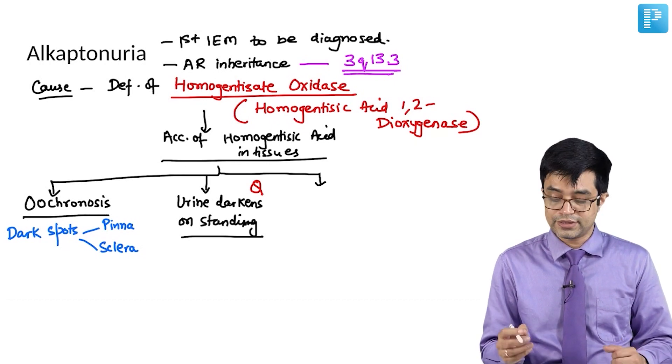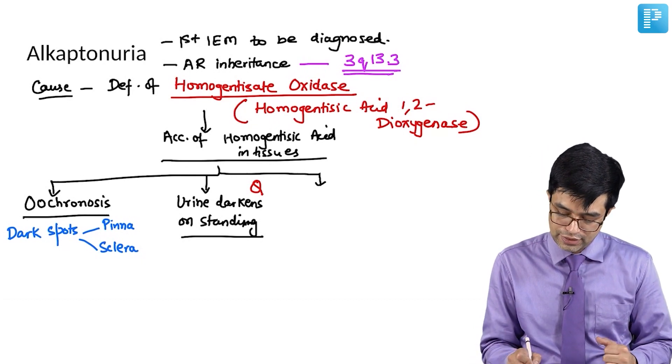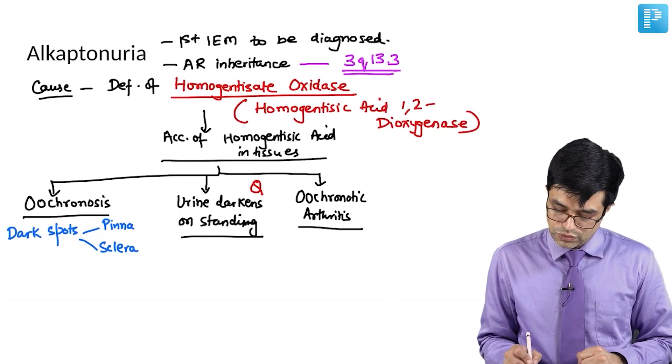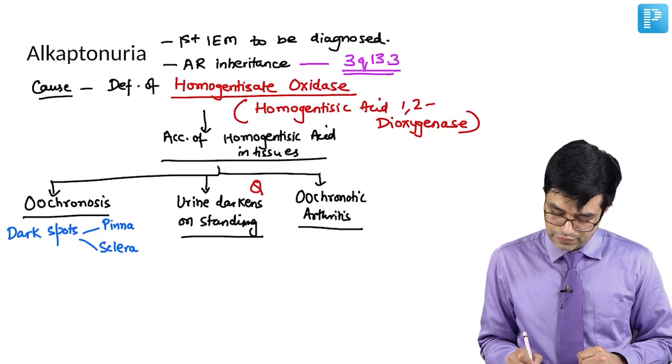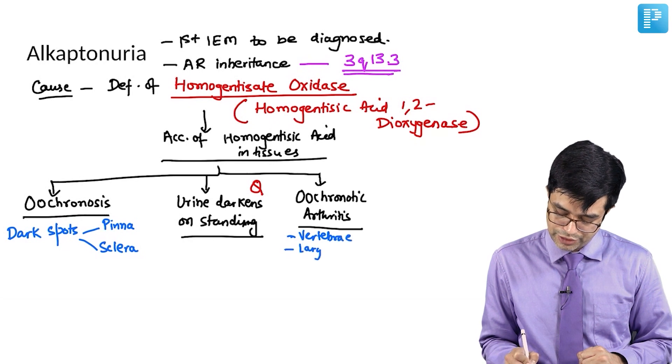Thirdly, this homogentisic acid will deposit in the joints and it will cause an arthritis called ochronotic arthritis. This ochronotic arthritis will involve the vertebrae as well as the large joints of the body.